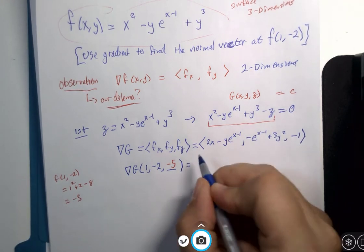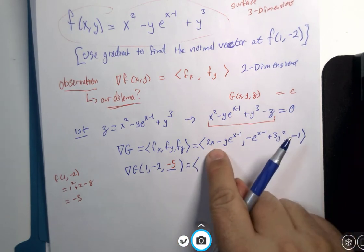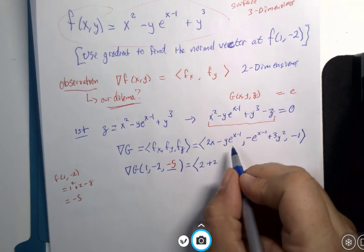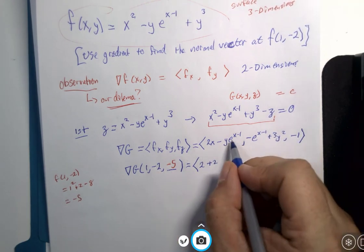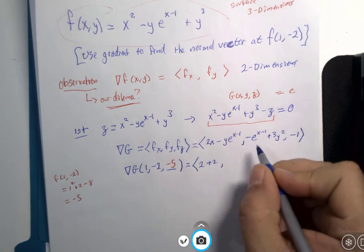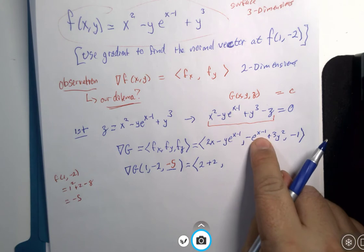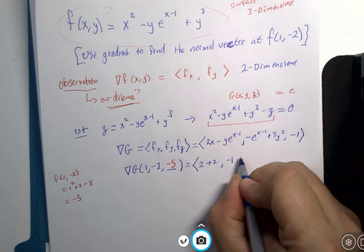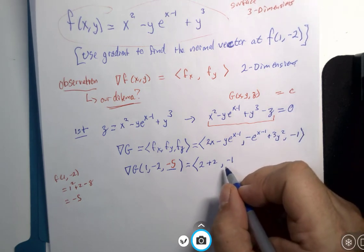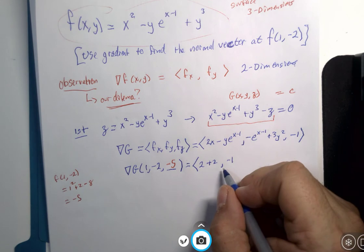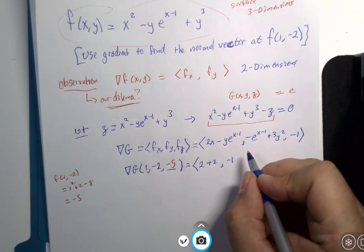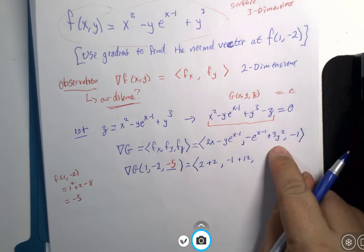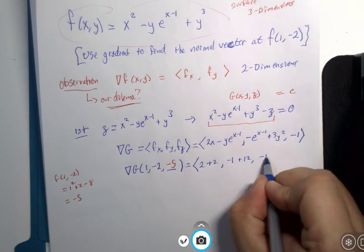And let's substitute the values in. 2 times 1 is 2. Minus a negative 2 is plus 2. e to the 1 minus 1, e to the 0 is 1. Negative e to the 0 would be negative 1. Y squared would be 4 times 3 is 12. And the z component is always negative 1.